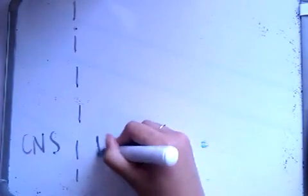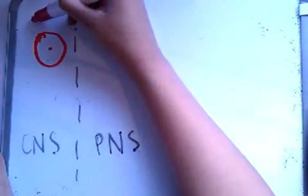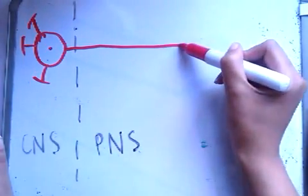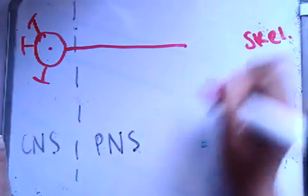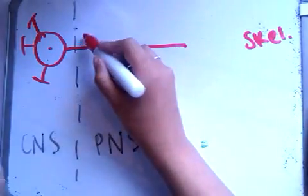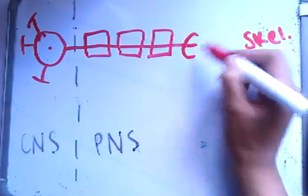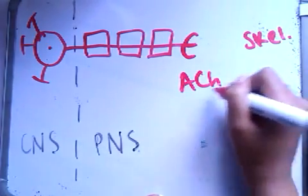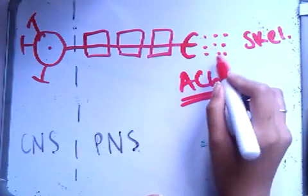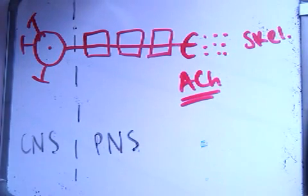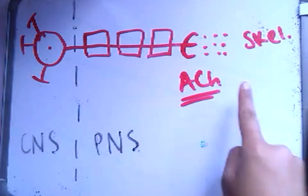I'm going to draw a somatic neuron so you can see it. Flipping the diagram so the central nervous system is on the left: a motor neuron has its cell body within the central nervous system with dendrites, and it carries to skeletal muscle. Because it's white matter it's myelinated. The key thing to remember is that at the synapse the neurotransmitter released is acetylcholine, which carries the impulse to the skeletal muscle. Notice it is only one neuron.